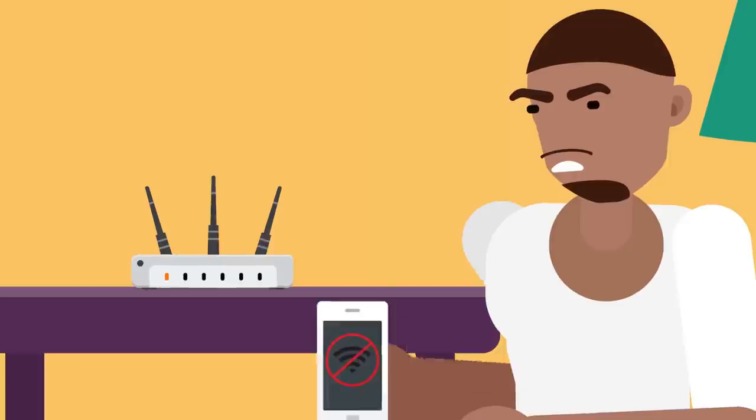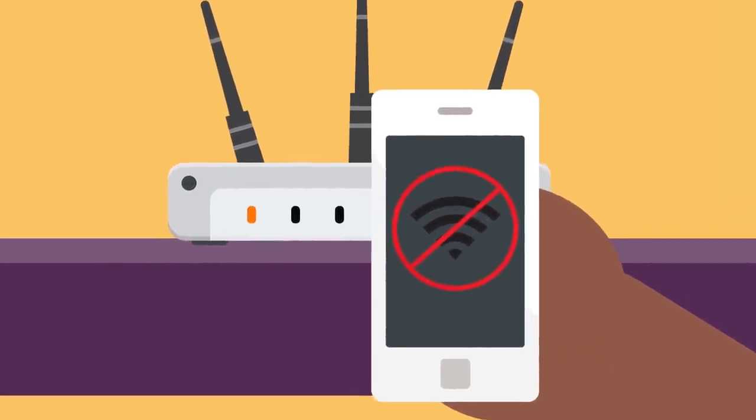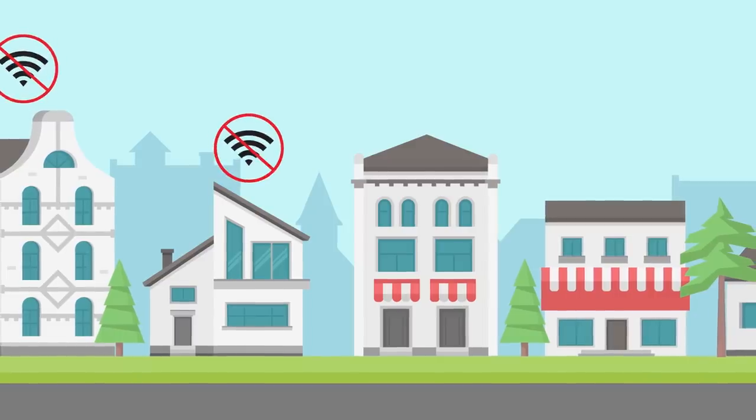So you pull out your smartphone, which uses a different cellular network, and you check your home ISP's website. There's a widespread mass outage encompassing several regions.